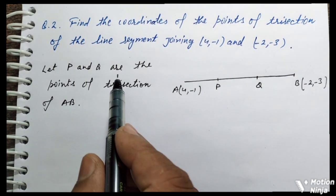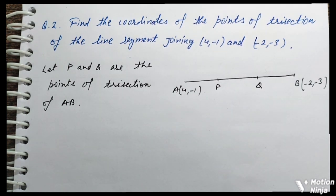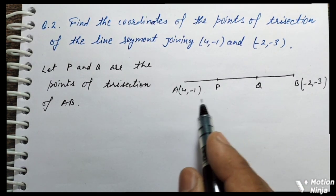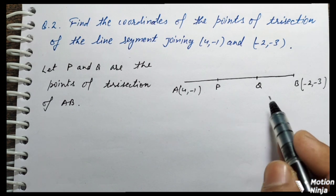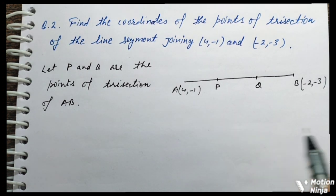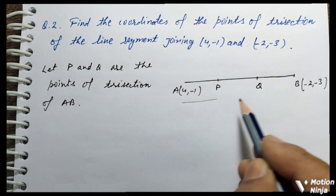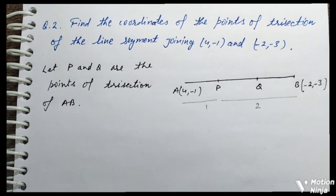Let P and Q be the points of trisection of AB. P और Q, AB के trisection के दो points हैं। जब हम P को find out करेंगे, तो इधर 1 part और उधर 2 parts बचेंगे, यानि ratio क्या होगा — 1 is to 2.